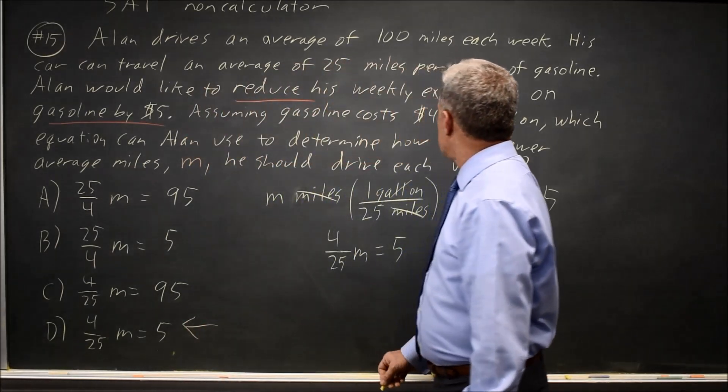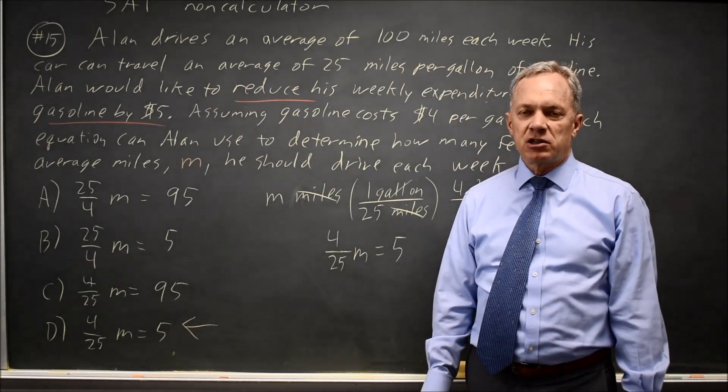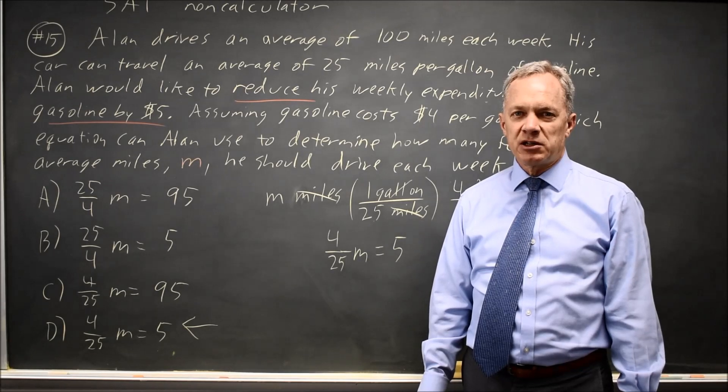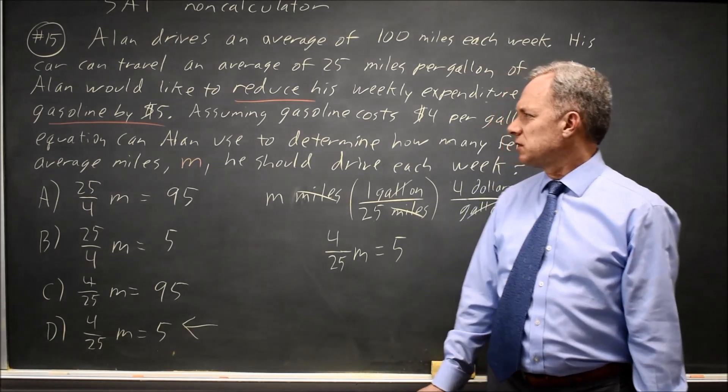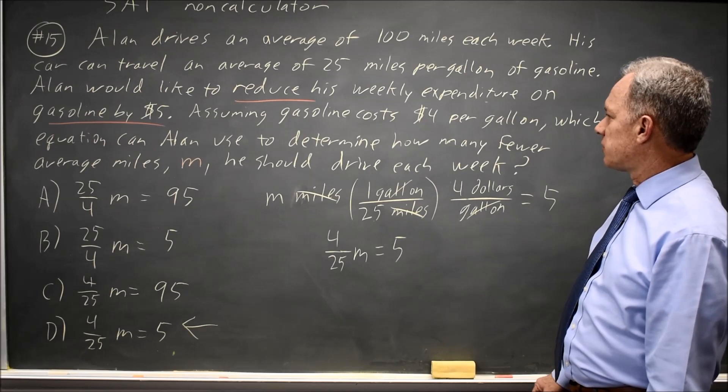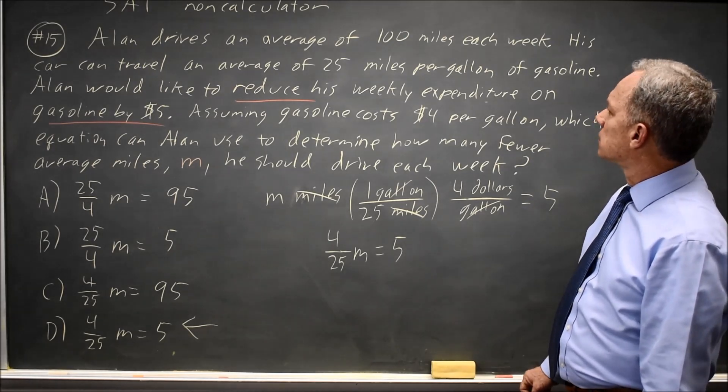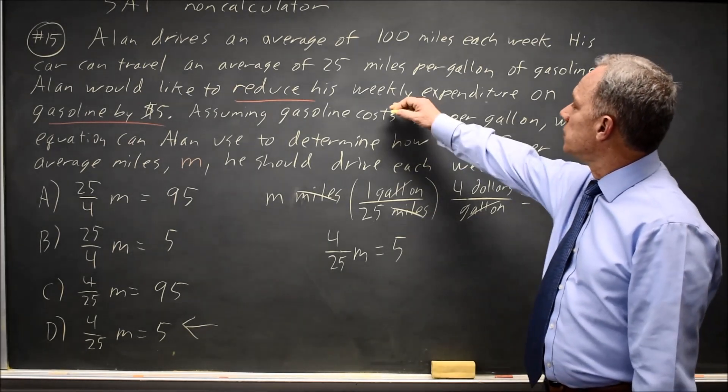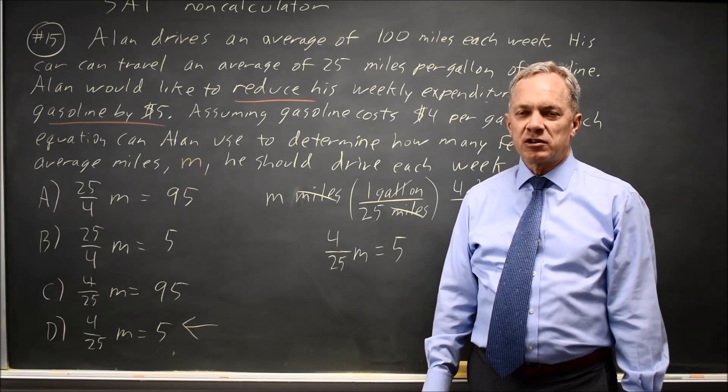D is the expression Alan would use to determine how many fewer miles he needs to drive each week to save the five dollars in the question.